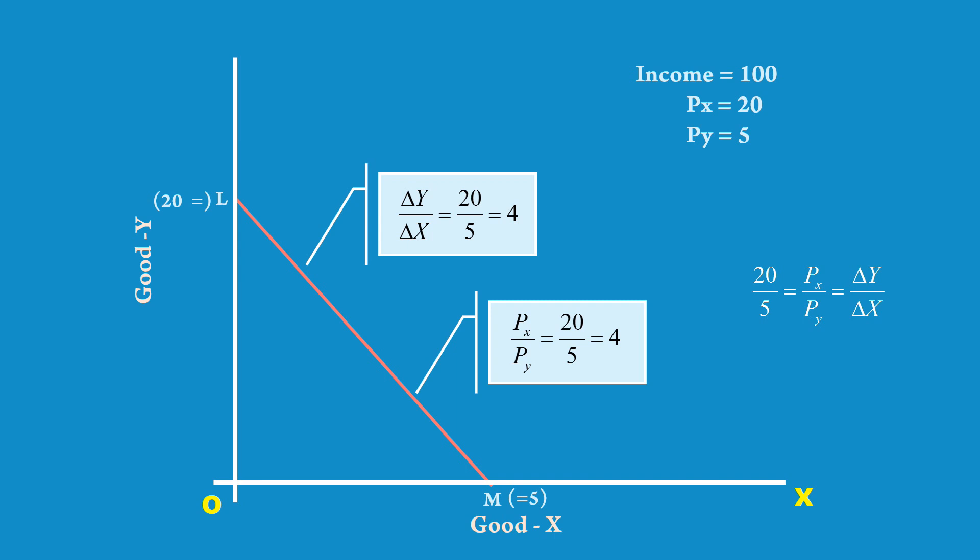How to interpret this? It means 4 units of good Y is equal to 1 unit of good X. This is the market rate of exchange.